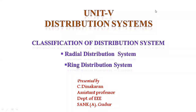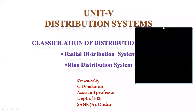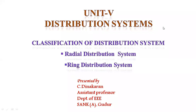In this class, I am going to explain the classification of distribution systems — specifically the radial distribution system and the ring distribution system. In the last class, we discussed that distribution systems are classified into two types: primary distribution system and secondary distribution system, based upon the operating voltage. In the primary distribution system, the operating voltage is 33 kV or 11 kV. In the secondary distribution system, the operating voltage is 440 volt — that is, three-phase three-wire or four-wire system.